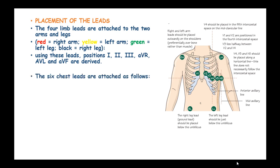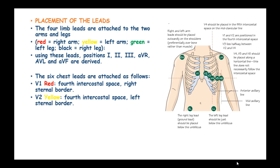The six chest leads are attached as follows. V1, which is red, is attached to the fourth intercostal space, right sternal border. V2 is yellow and is attached to the fourth intercostal space, left sternal border.